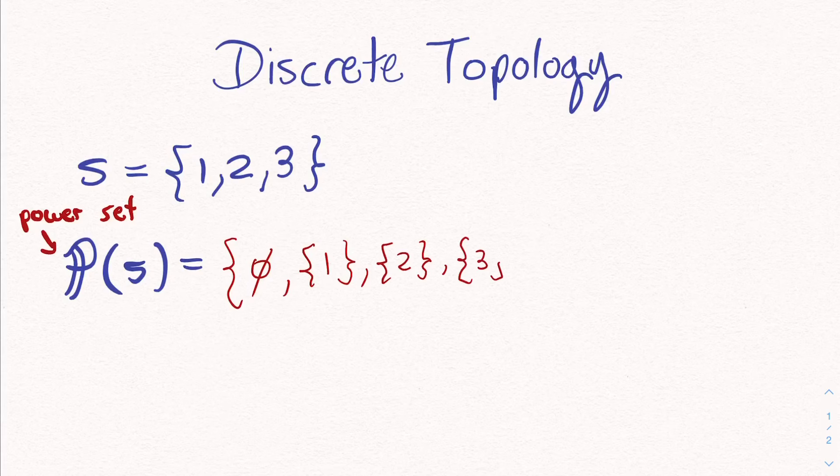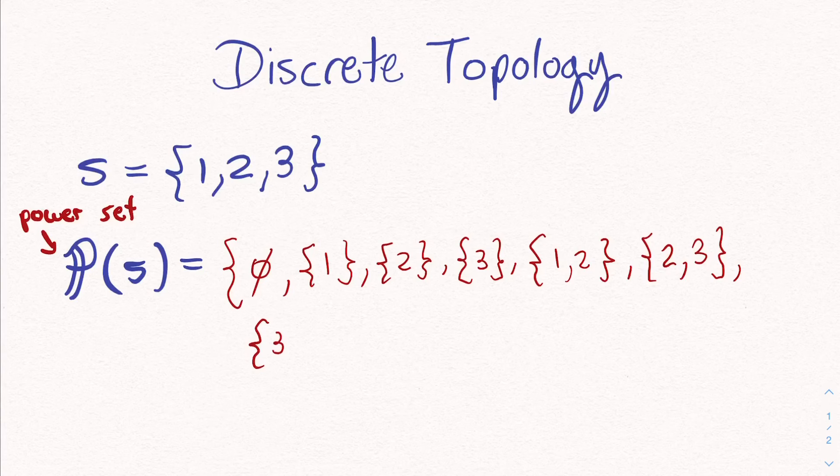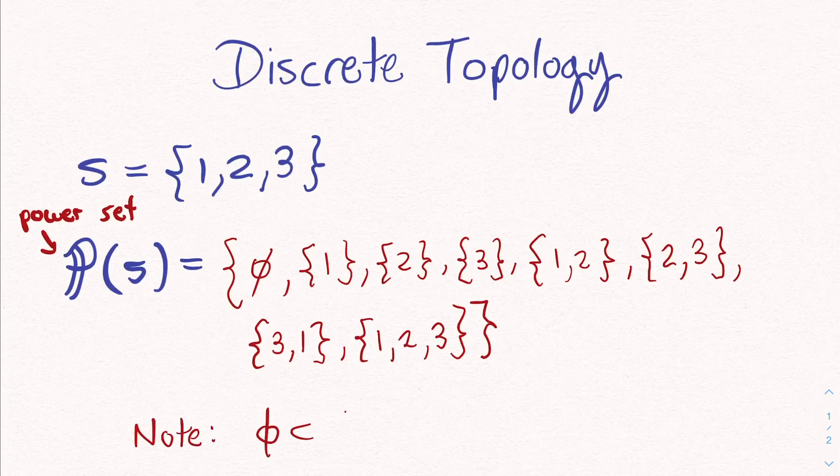First, we have the empty set. Then, we have all of our single element subsets. Then, we have our subsets with two elements. Finally, we get the set itself, which is a maximal subset of X. This definition of subset throws some people off. But just remember that the empty set and the set itself are subsets of X.